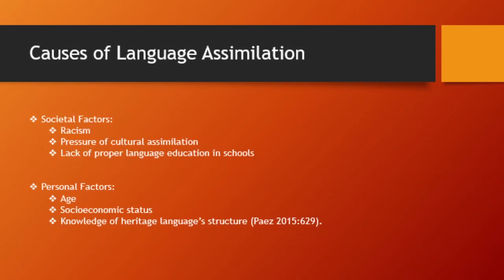There are a variety of factors that contribute to language assimilation in America. Not only are there societal factors such as racism, pressure to culturally assimilate, and lack of proper language education in schools, but also personal factors such as age, knowledge of the structure of a first language, and socioeconomic status.